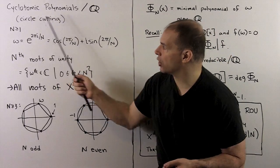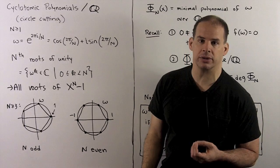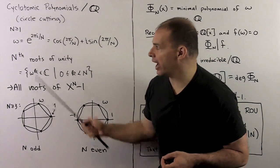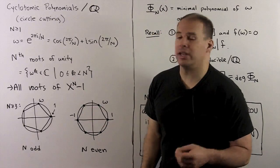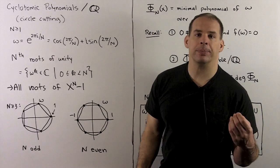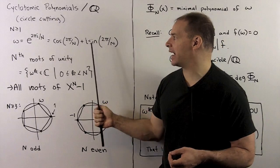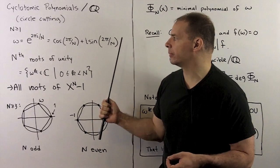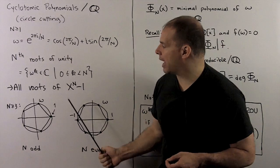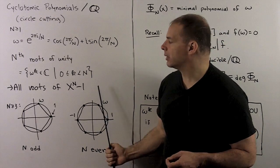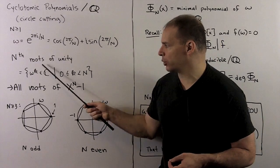Now, cyclotomic means circle cutting, so let's first note the connection between roots of unity and cutting up circles. We'll fix an integer n ≥ 1 and define omega as e^(2πi/n). By Euler's formula, this equals cosine(2π/n) + i·sine(2π/n). Now, omega is an nth root of unity, so it's a root of the polynomial x^n − 1, and all other roots of this polynomial are of the form omega to an integer power.